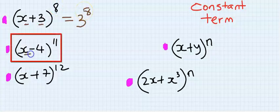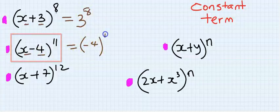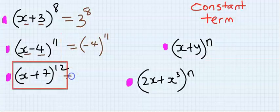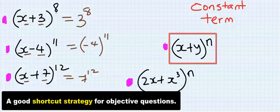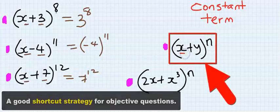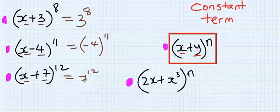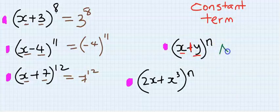Here we have a variable and a constant. The constant term here will be minus 4 to the power of 11. Here I have a variable and a constant. The constant term will be 7 to the power of 12. If you have a variable and another variable separated by an operator, here constant term does not exist.